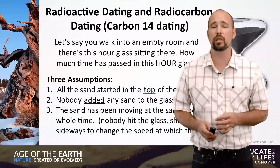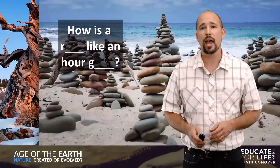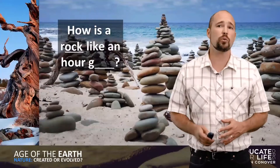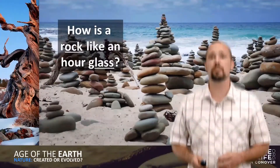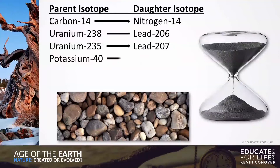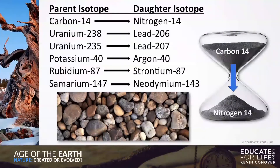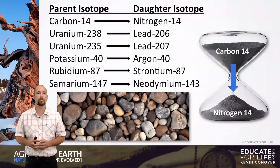These are the same problems with radioactive dating and carbon-14 dating. How is a rock like an hourglass? On the left we have what are called parent isotopes and on the right we have what are called daughter isotopes. Carbon-14 is a parent isotope — it's radioactive, it's unstable, and it changes into nitrogen-14 over time. It has what's called a half-life.